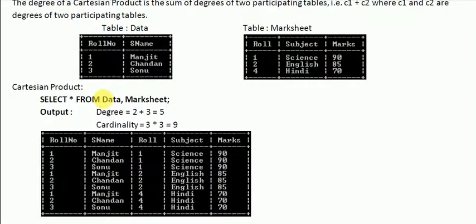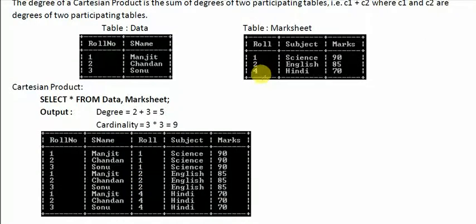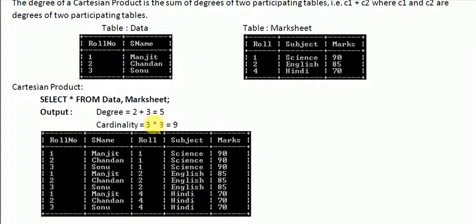Since the 'data' table is written first, it combines first. If the 'marksheet' table were written first and 'data' second, the output order would change accordingly. The degree of the Cartesian product is 2 + 3 = 5, since one table has 2 columns and the other has 3. The cardinality is 3 × 3 = 9.